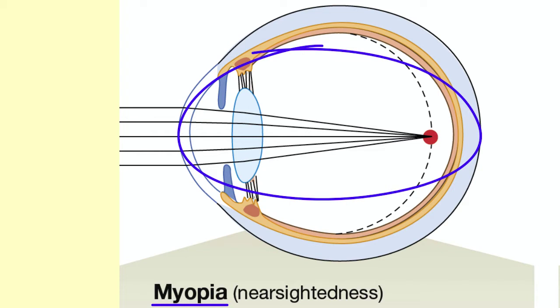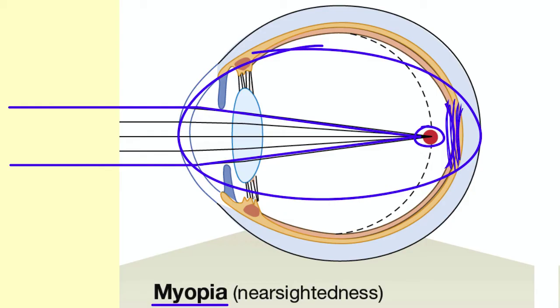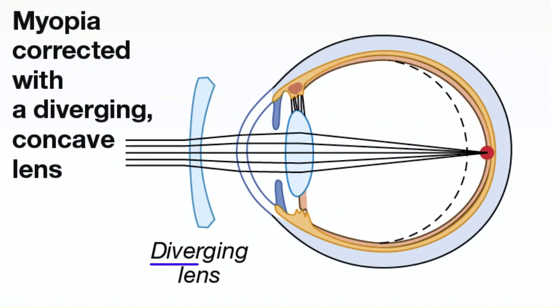So when viewing distant objects, light is bent but focuses too soon at a point in front of the retina. When the light reaches the retina, it is out of focus, so the image is blurry. Nearsightedness is corrected with a diverging lens that refracts the light to focus it correctly on the retina.